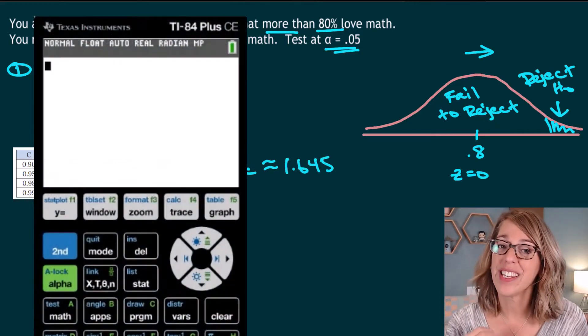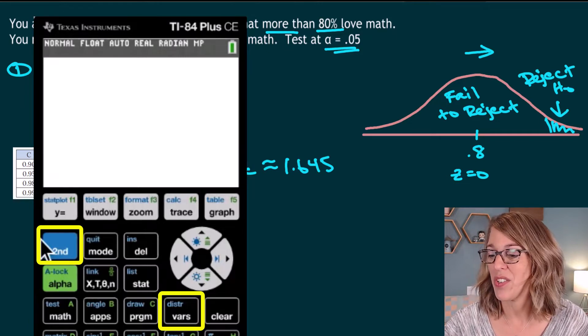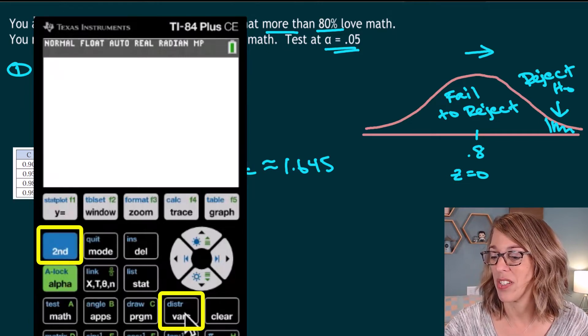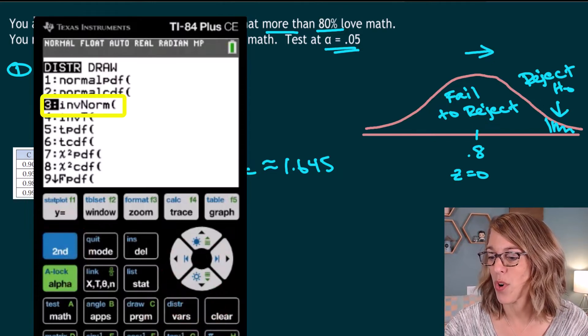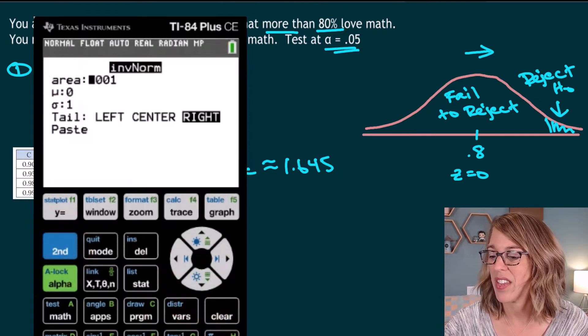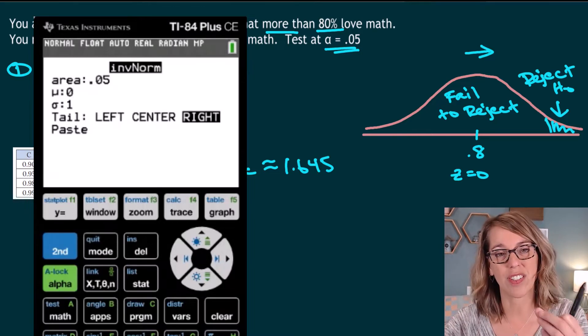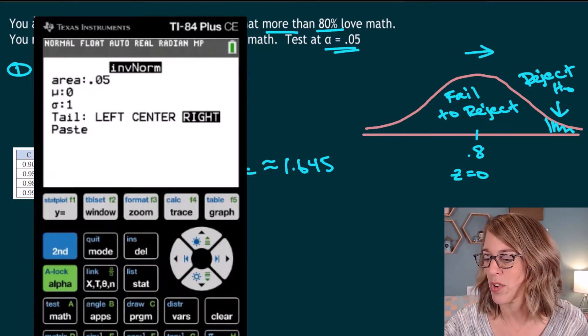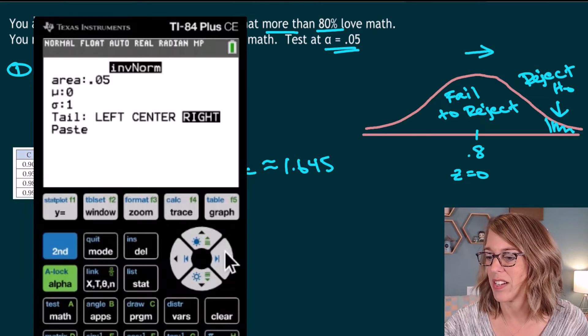I can also really easily find this critical Z score with my TI-84 calculator. So I'm going into second distribution. So I'm going to go into my distribution menu and I'm going to choose inverse norm and then hit enter. The area in my tail is that significance level of 0.05. I'm going to leave the mu and standard deviation at zero and one for my standard normal curve.